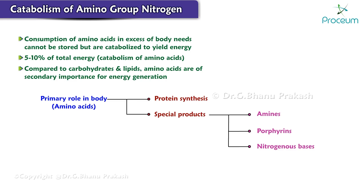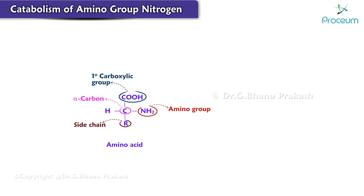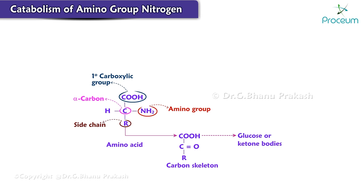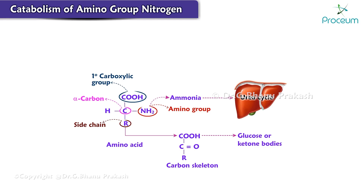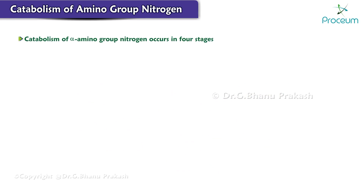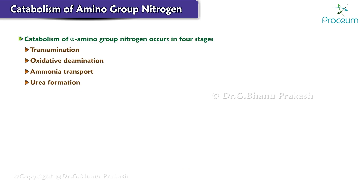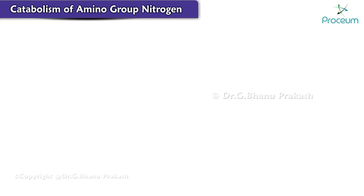Nitrogenous bases of phospholipids, polyamines, etc. When amino acids are catabolized, the carbon skeleton is either converted to glucose or ketone bodies, while the alpha amino group is released as ammonia and carried to the liver where it is incorporated into urea formation. Urea is the major nitrogen excretory product. The catabolism of alpha amino group nitrogen occurs in four stages: transamination, oxidative deamination, transport of ammonia, and urea synthesis.